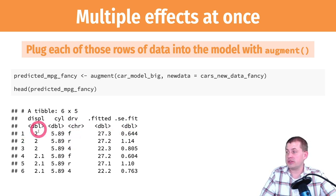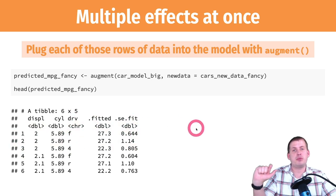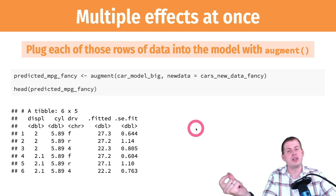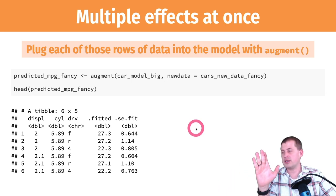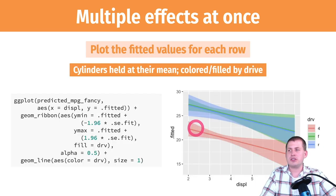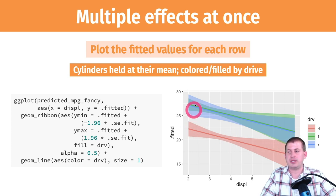Then we use this dataset to make a plot. Now that we have a varying drive column, we can map drive as another aesthetic — fill by drive, color by drive, or facet by drive. Here's one example where cylinders are held at their mean but we're varying both displacement and drive. Four-wheel drive on average gets much lower miles per gallon than the other two. Front and rear-wheel drive are fairly indistinguishable — right on top of each other — and the effect of changing displacement is basically the same for both.